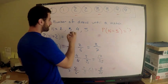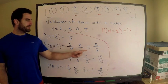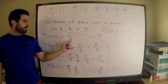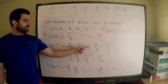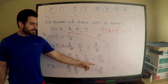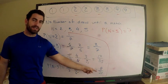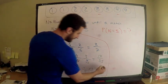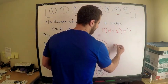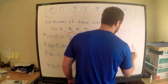Quick sanity check: do these add to one? With LCD of 35: 1/7 = 5/35, 2/7 = 10/35, 12/35, and 8/35. That's 5 + 10 + 12 + 8 = 35/35. They add to one. So the answer is P(N=5) = 8/35.